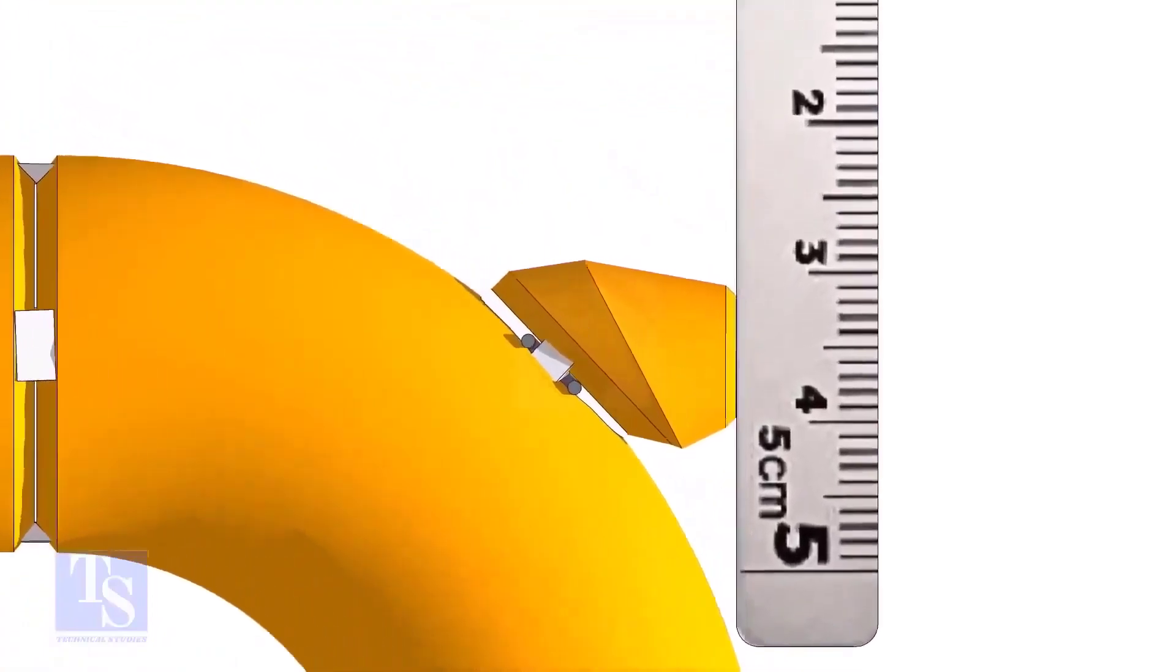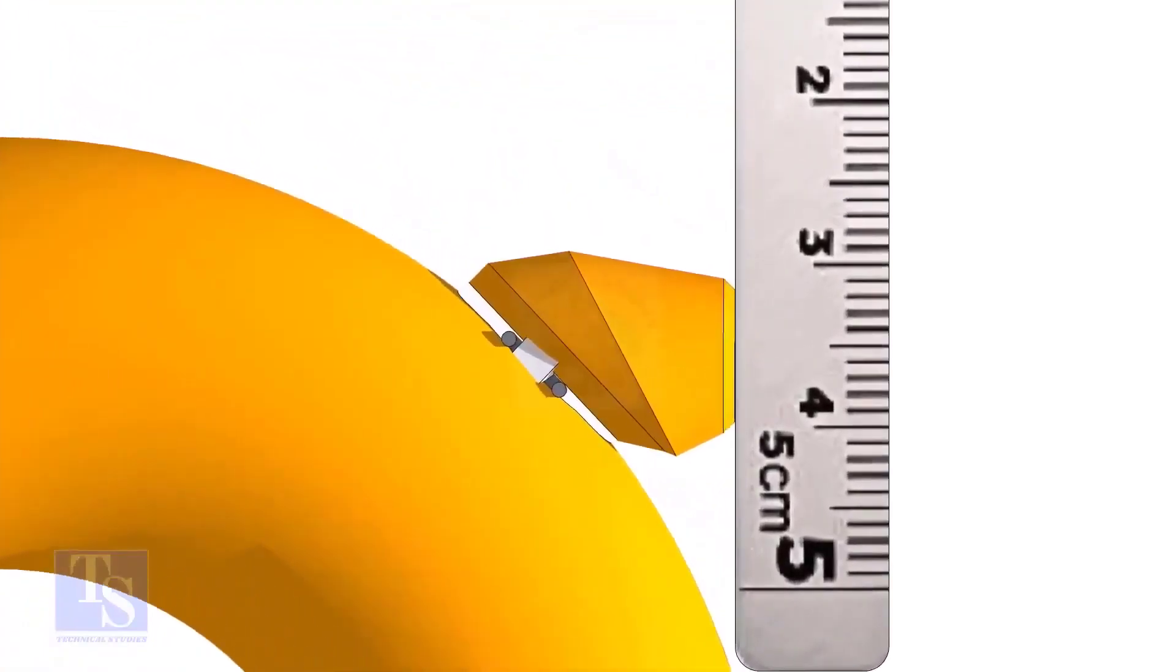Maintain the vertical squareness and tack weld on the top and bottom side of the elbowlet.